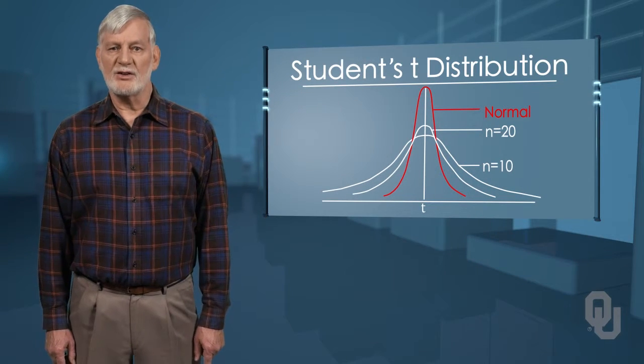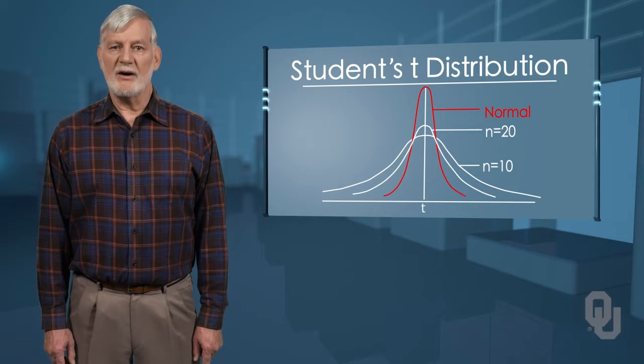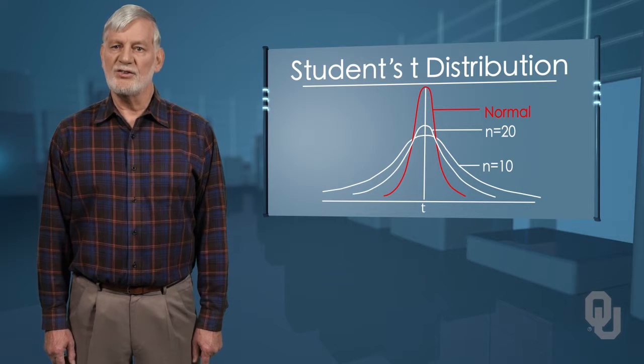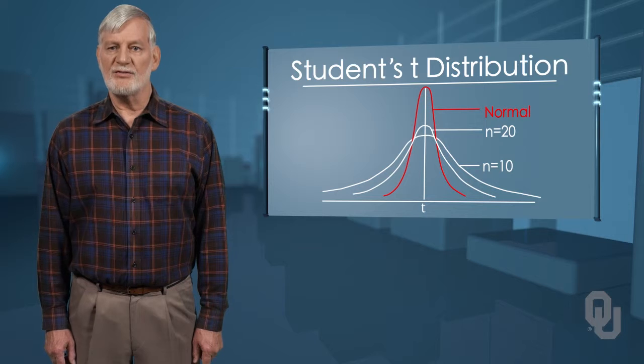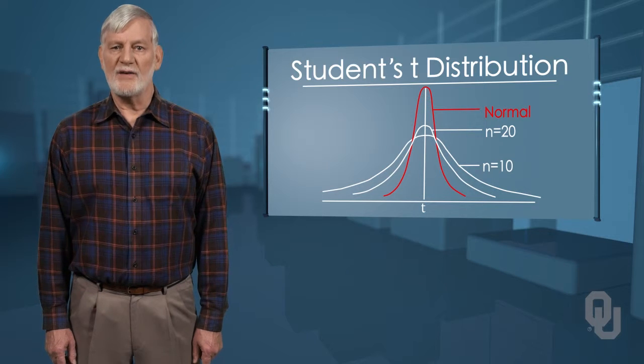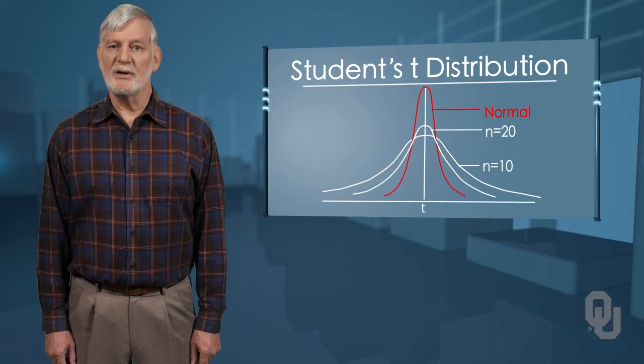We can confirm this limiting feature of the normal by comparing the value found in the student's t table at infinite degrees of freedom, with those values found in the normal table for the same level of probability.